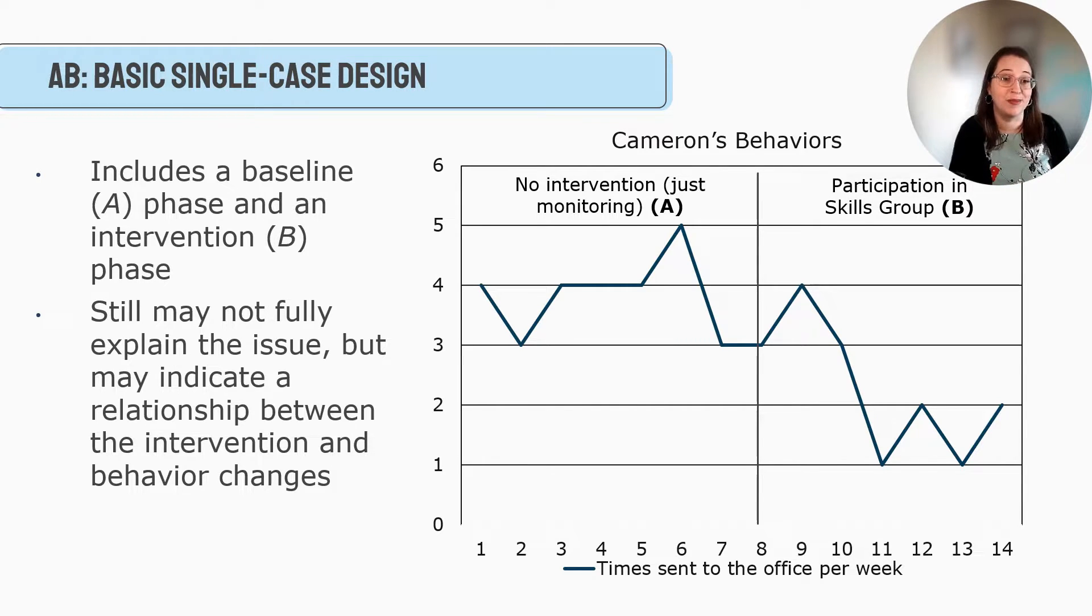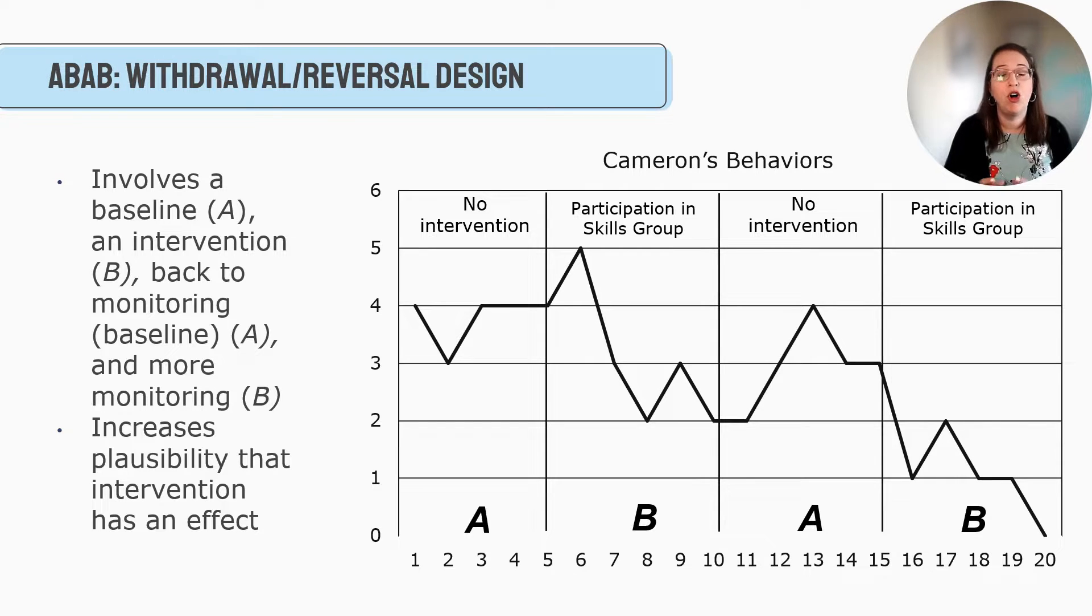We also have what's called the ABAB design, which is also known as the withdrawal reversal design. And this is the idea that you start with the baseline, that A phase. Then you implement the intervention. So let's say with Cameron, we monitor him for five weeks. Then we put him in a participation skills group. You notice he goes to the office a little bit after the intervention starts. And just from my personal experience, that's not uncommon. When kids feel overwhelmed, they don't know how to handle the new intervention. Maybe he feels embarrassed. He might act out a little bit more. In the next five weeks, we start to see a slight decrease.